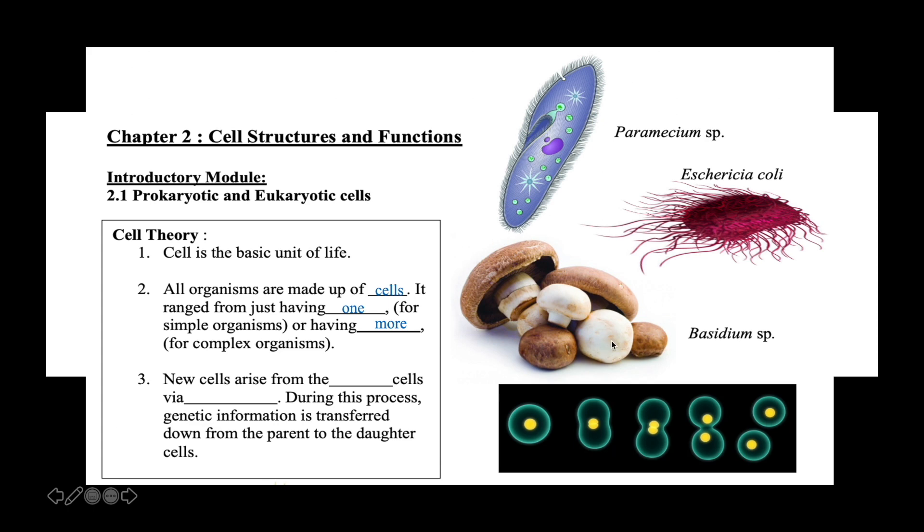New cells arise from pre-existing cells via cell division. If you see a cell, that cell wouldn't appear there just out of nowhere. It appears because the pre-existing cell has divided. During this process, during cell division, genetic information is transferred down from the parent to the daughter cells.